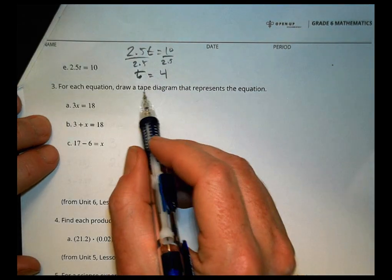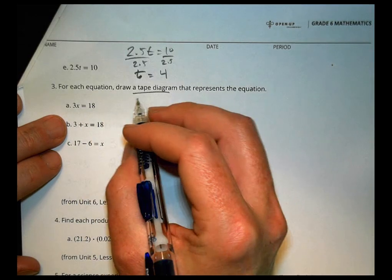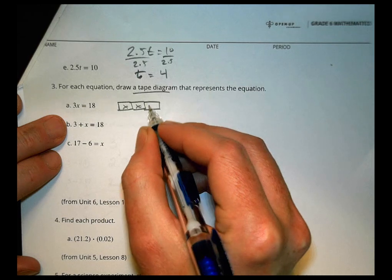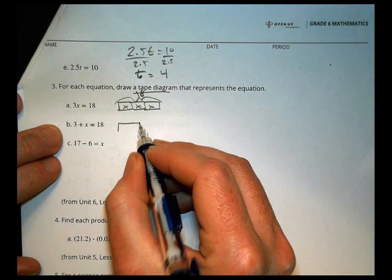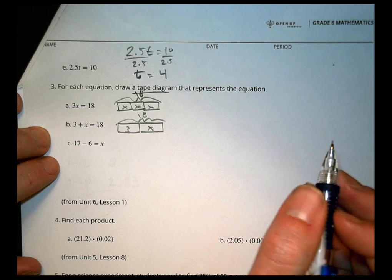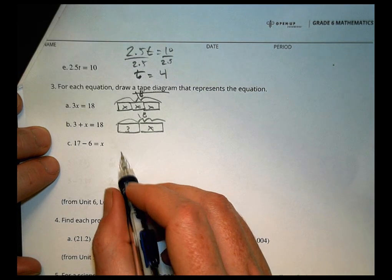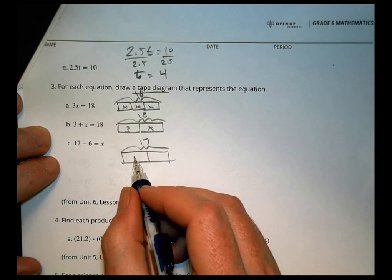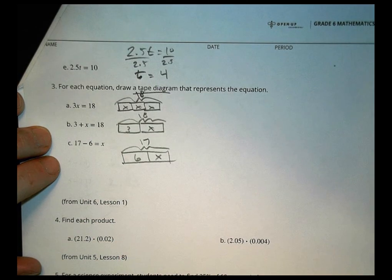Number three. For each equation, draw a tape diagram that represents it. Alright. So the first one, 3X equals 18. So this is going to be three groups of X equals 18. This one is three plus an X equals 18. And this one, we can say we're going to have a whole thing, 17. And we have a six, and we have an X. Just like that. Okay. That's the idea.